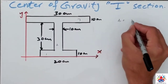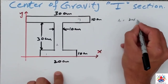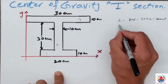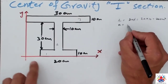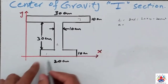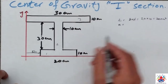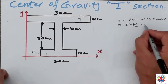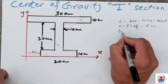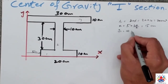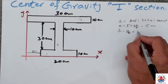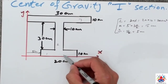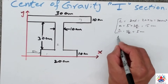First, area one is b multiplied by d, so 20 multiplied by 10 equals 200 square centimeters. x1 is measured from the reference line: 5 plus 20 divided by 2 equals 15 centimeters. y1 is 10 divided by 2, which equals 5 centimeters. So for part 1 we have A1 = 200, x1 = 15, y1 = 5.